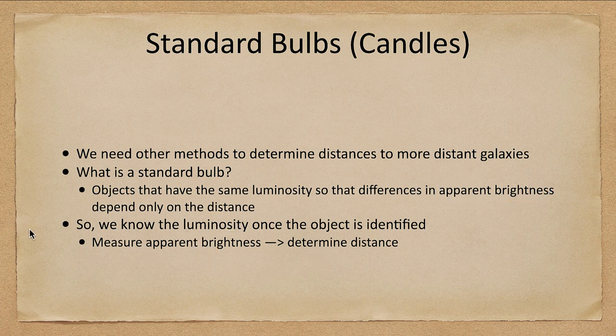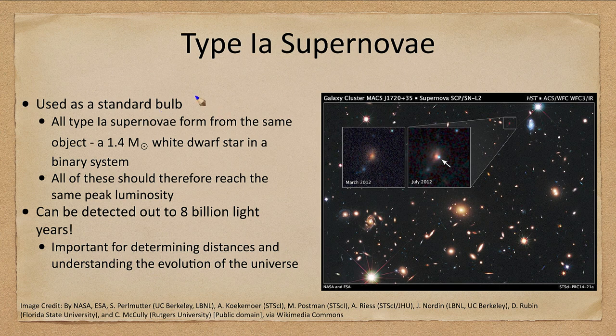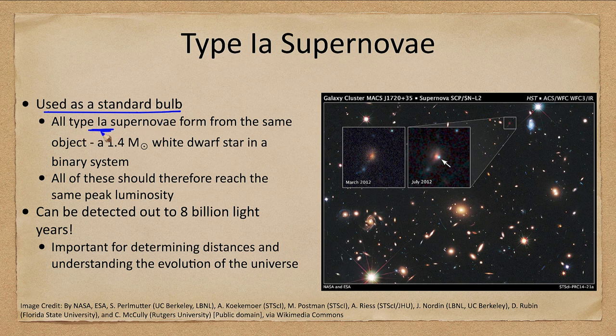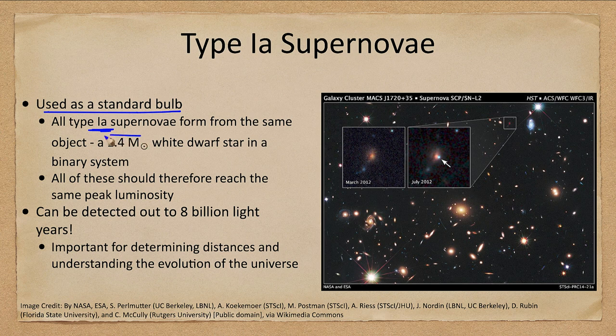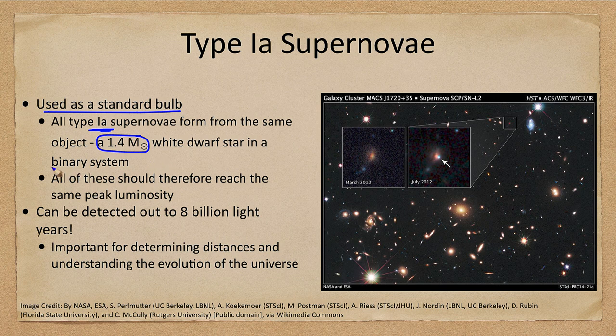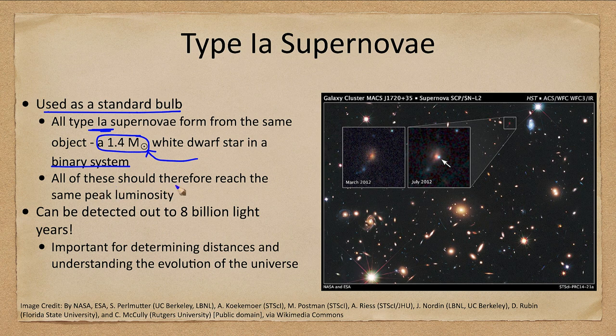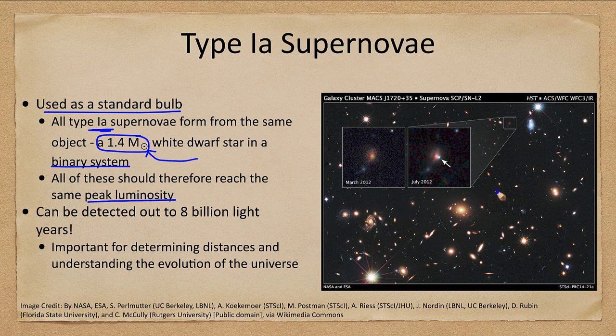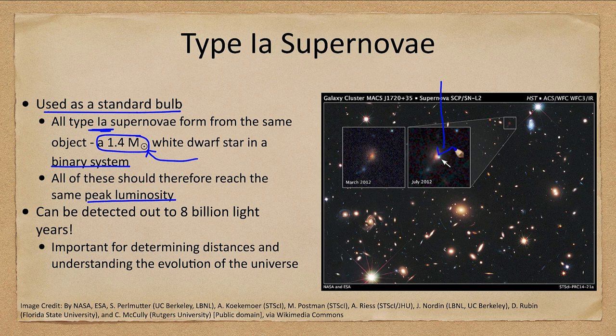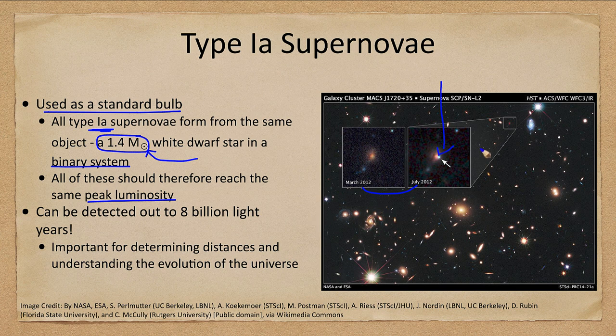Now, one of the most prominent standard bulbs that we use are the type 1A supernovae. These are a good standard bulb. Why? If you recall, a type 1A supernova are all made from the same type of object: a 1.4 solar mass white dwarf star in a binary system. They're all exactly the same objects that explode. They should theoretically reach the same peak luminosity, meaning that when we see something like a supernova go off in one of these galaxies, as we see here in images taken in March and then in July of 2012 from this small distant galaxy, we can detect them.